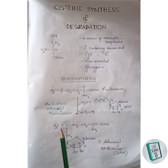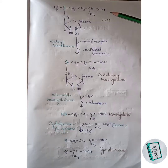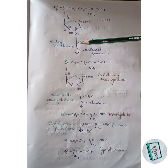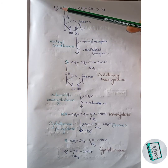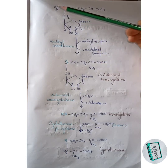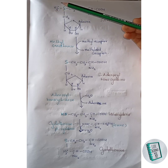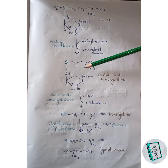The enzyme which catalyzes this reaction is methionine adenosyl transferase, and S-adenosyl methionine is formed. The S-adenosyl methionine thus formed then in the presence of methyl transferase donates its CH3 group — that is, the methyl group — to a methyl acceptor and forms S-adenosyl homocysteine.